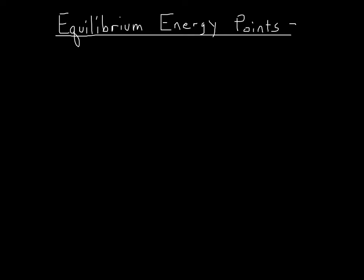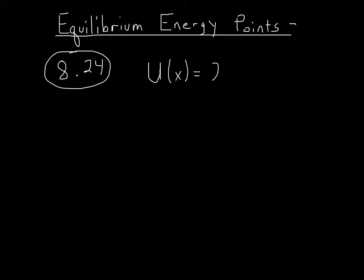This is a problem we went over in class, but to repeat it here so you can review it — this is based on problem 8.24, chapter 8, problem 24. In this problem, we're asked to find the equilibrium energy points for a potential energy function. We're given this function: u of x is equal to 2x to the fourth power minus x squared. You can answer this question by doing graphs, which is what your book uses for its approach. You can also answer this question using calculus, which is what I'll focus on here — using calculus to solve this problem without a graphing calculator.